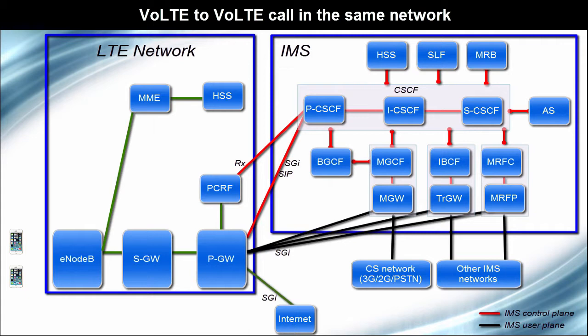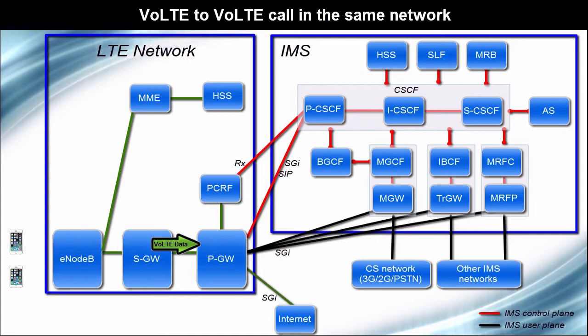VoLTE to VoLTE call in the same network. This is the easiest scenario one can think of. In this case, both UEs are connected to the same LTE network. For the purpose of understanding, let's assume both mobiles are connected to the same PDN gateway. Data from UE1 will go to the PDN gateway, and from the PDN gateway it will go to UE2. Both UEs will talk to the same IMS network for VoLTE call setup. The main thing to notice here is that IMS network will be used only for SIP signaling. For the user plane, it is non-mandatory to bring the IMS network into picture.